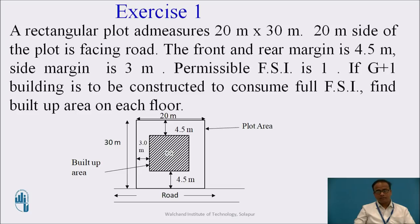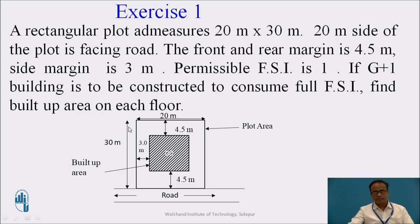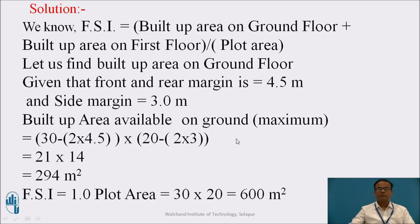Let us consider an example. A rectangular plot measures 20 meters by 30 meters. The shorter side of the plot is facing the road. The front and rear margin is 4.5 meters and the side margin is 3 meters. The permissible FSI is 1. If a G plus 1 building is to be constructed to consume full FSI, find the built-up area on each floor. The plot dimension is 30 meters by 20 meters, with the 20-meter side facing the road. The hatched portion indicates the built-up area. FSI is given by: (built-up area on ground floor + built-up area on first floor) divided by plot area.